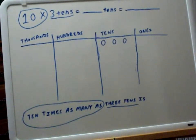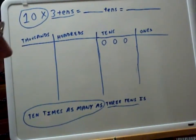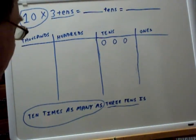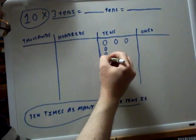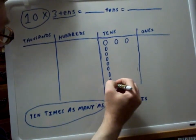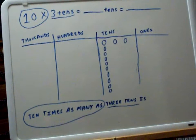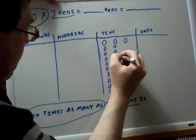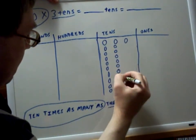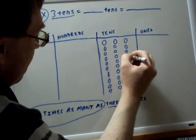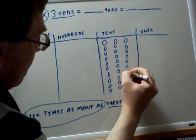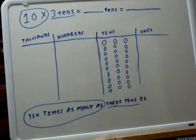Now the problem really states that we have ten times three tens. Now how do they want you to represent the ten times? Well, now we're going to say that instead of having three bags, we're going to have thirty bags. So here comes the rest of the bags. There's ten of your bags, there's twenty of your bags, and there's thirty of your bags.